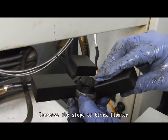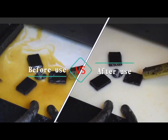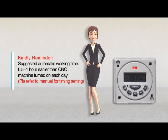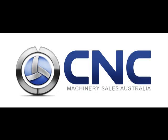Before use versus after use comparison shows efficiency. One hour running every day, dispose once a week, one kilowatt hour each month. Handling reminder: suggested automatic working time is 0.5 to one hour earlier than CNC machine turn on each day. Please recall manual for details.